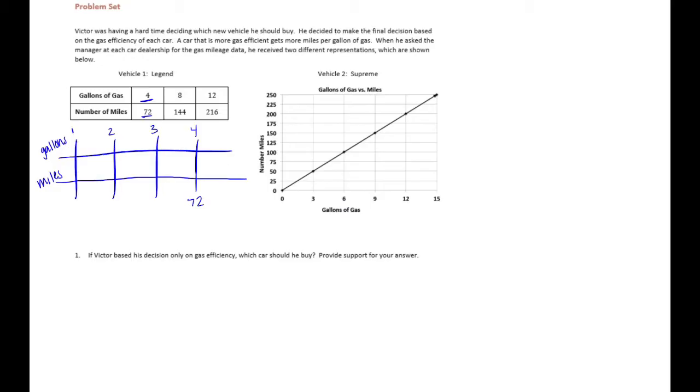In order to figure out how many miles you get with one gallon of gas, let's take 72 and split it into four equal parts. Four goes into seven one time, one times four is four, get 32. Four goes into 32 eight times, that's 32. So we can say that this gets 18 miles per gallon. So the Legend equals 18 miles per gallon.